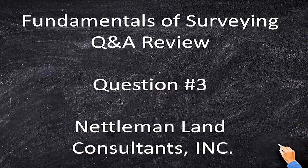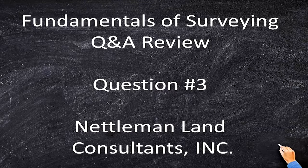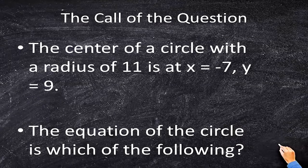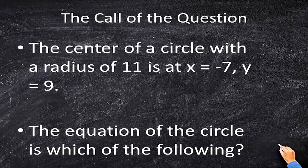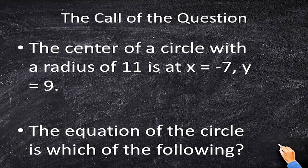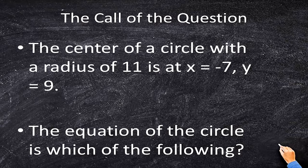Welcome to the Fundamentals of Surveying question and answer review session with question number three. The call of the question states: the center of a circle with a radius of 11 is at x equals negative 7 and y equals 9. The equation of the circle is which of the following?